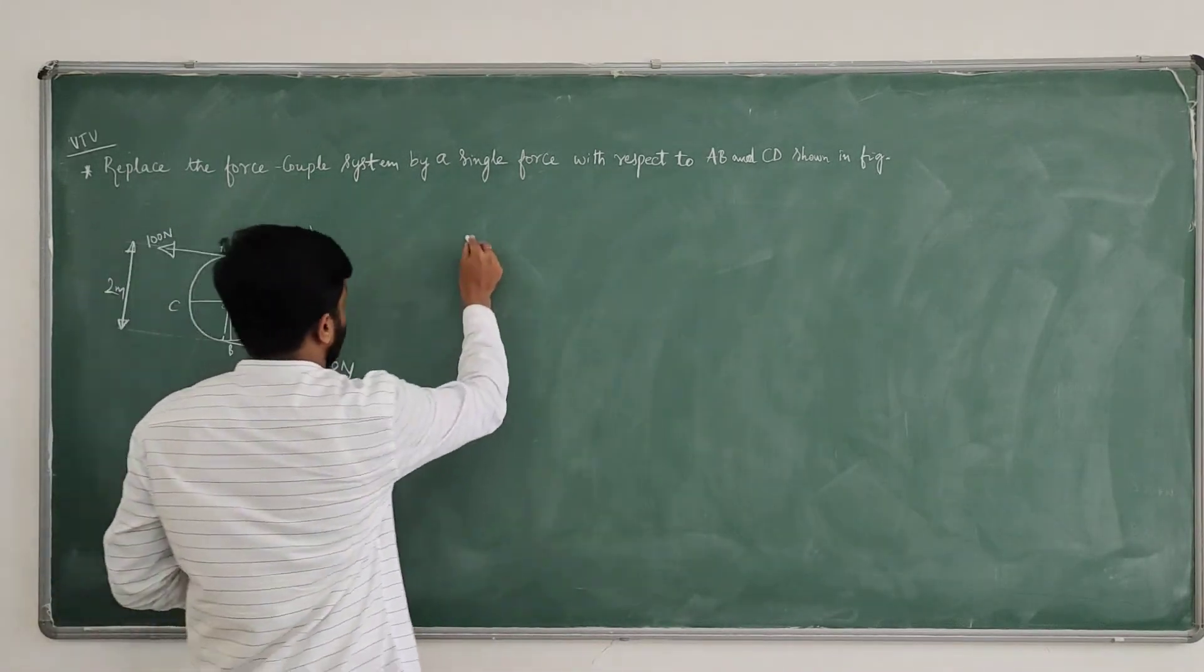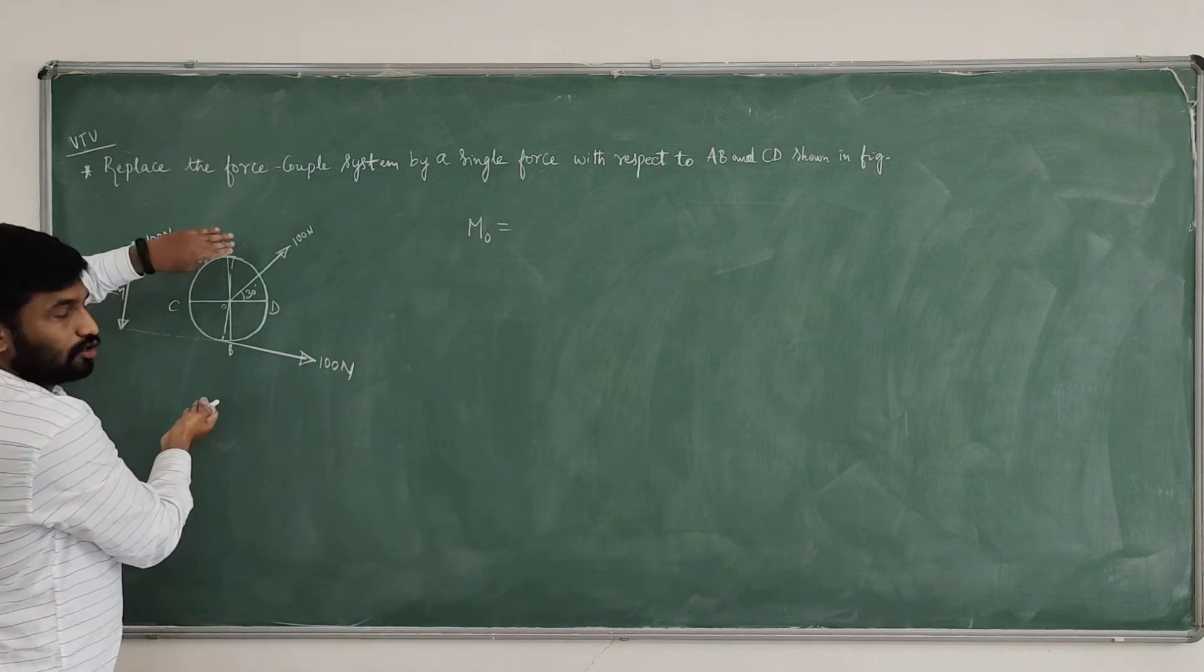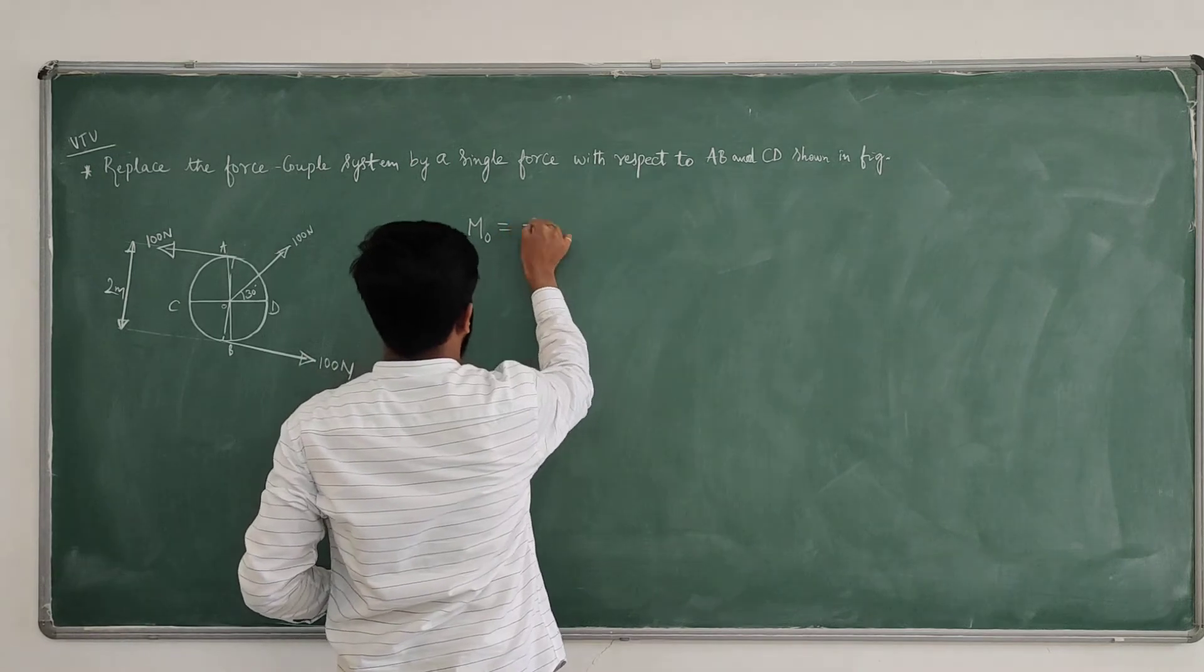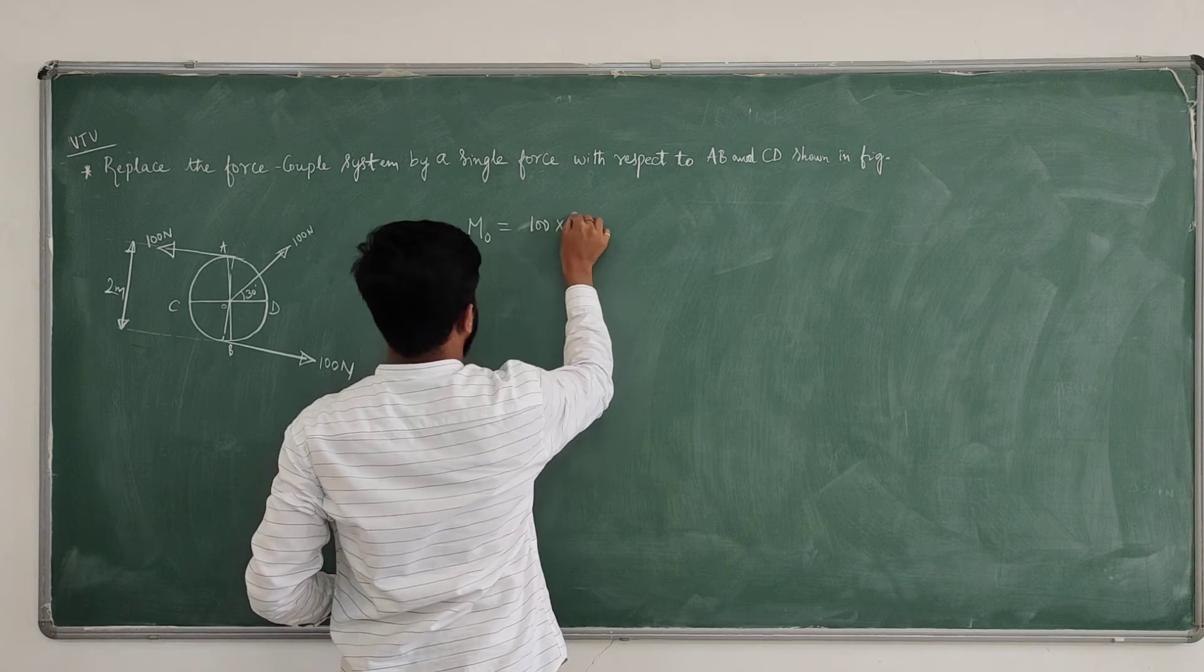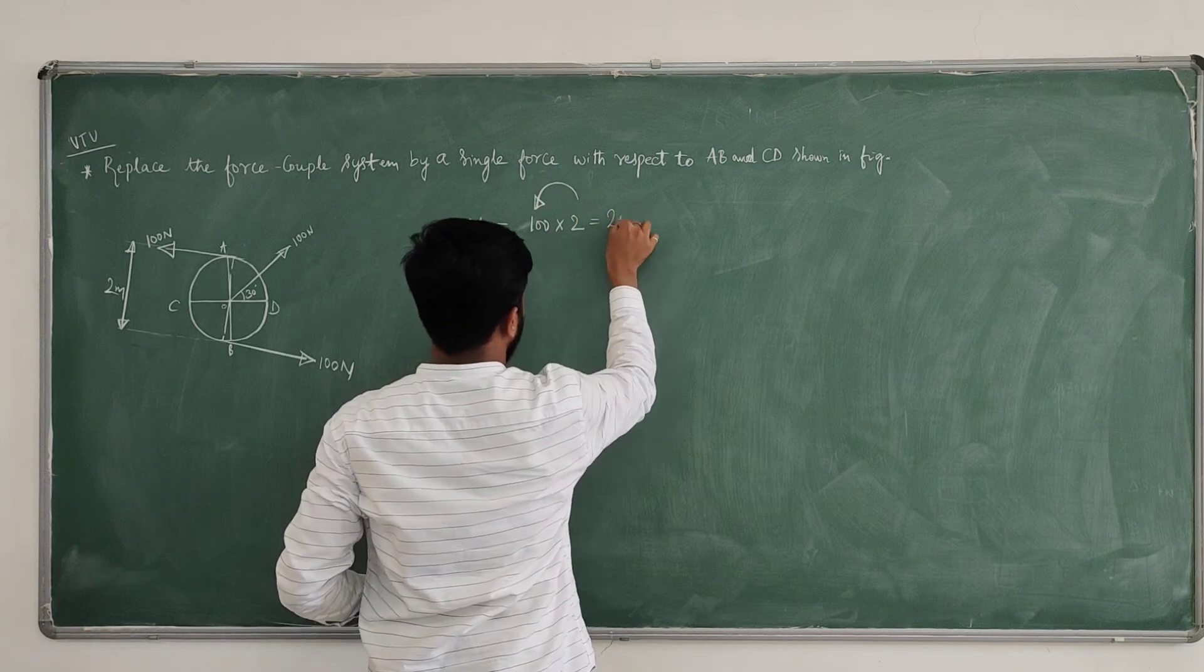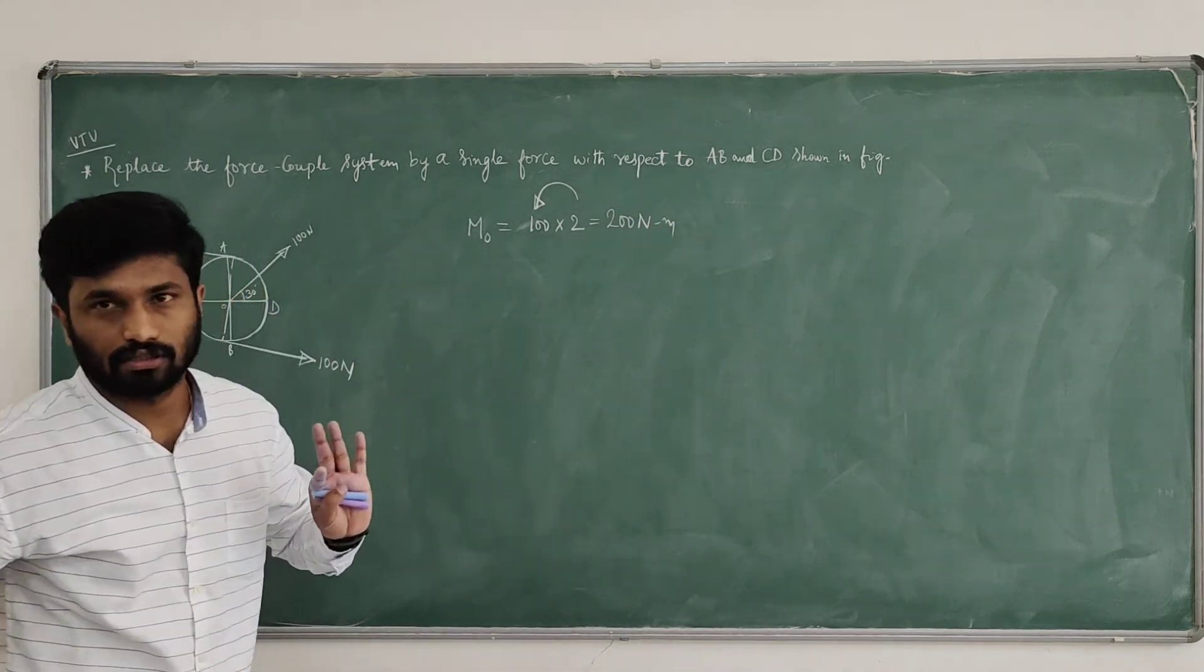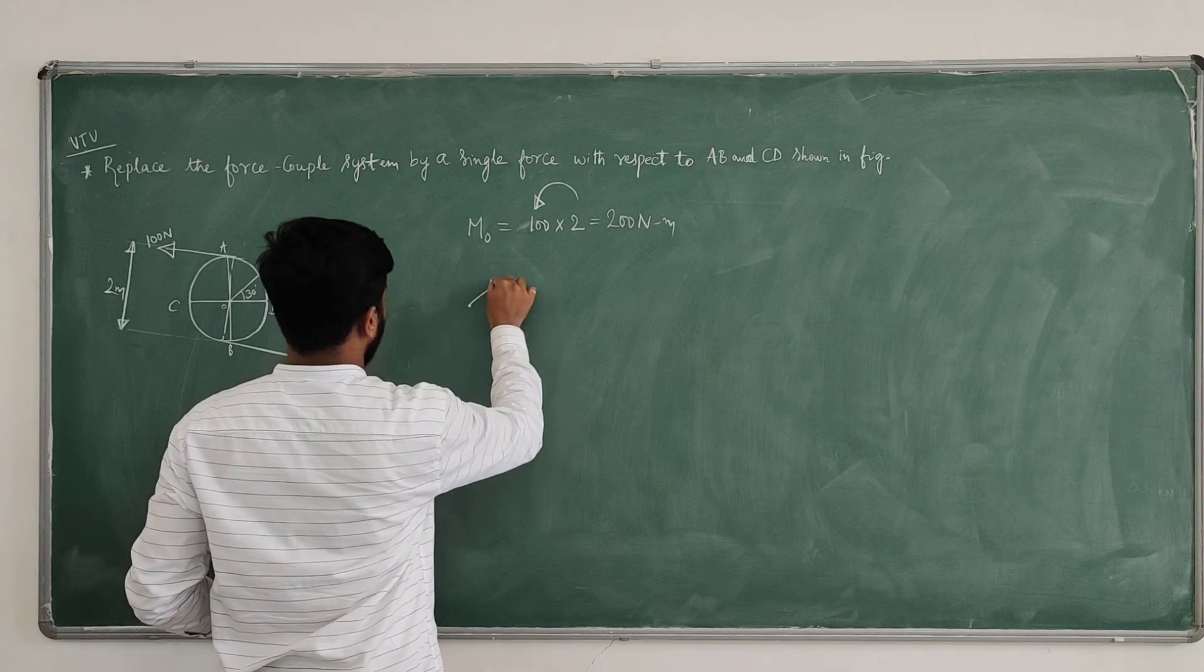First M0. What is M0? That is moment, couple effect. Anticlockwise. Hundred multiplied by 2 anticlockwise. What is the value? 200, 200 newton meter. This is M0. And next, I will resolve this. If you resolve with respect to O.